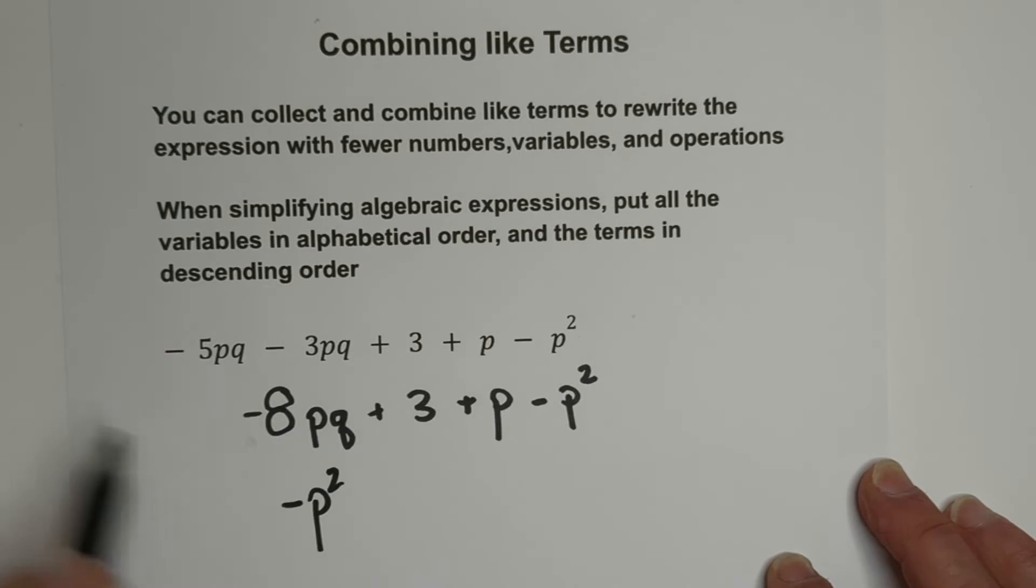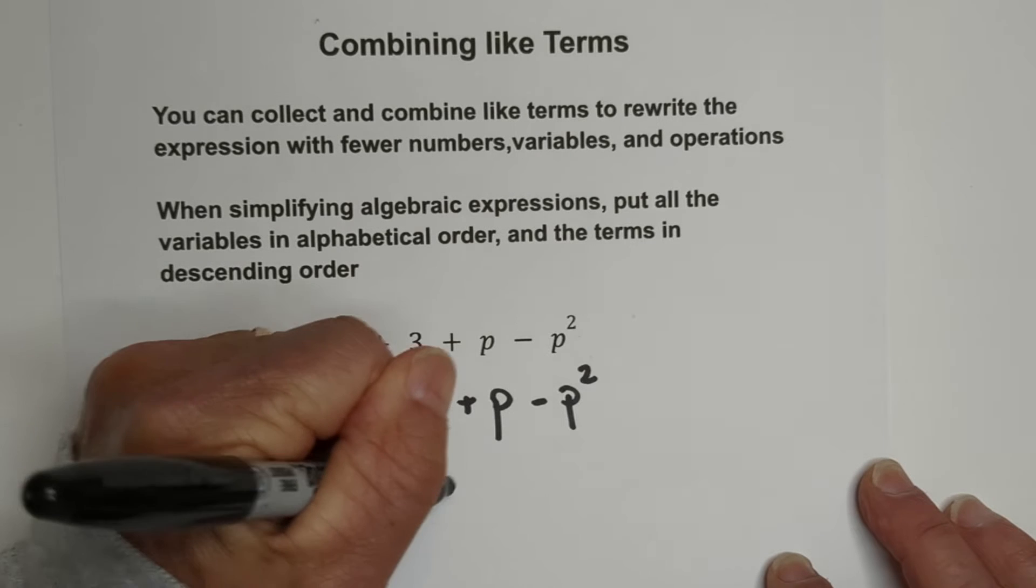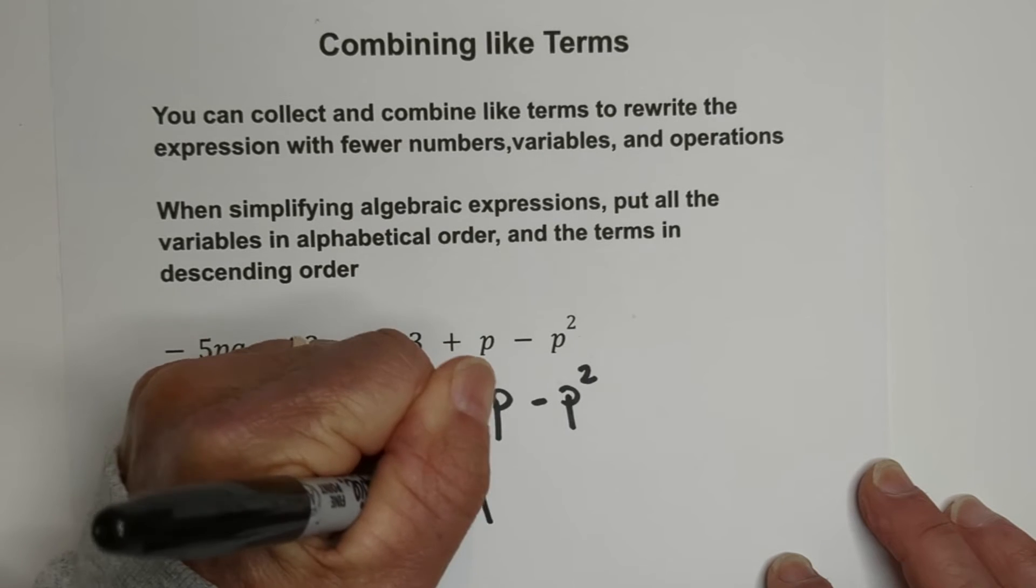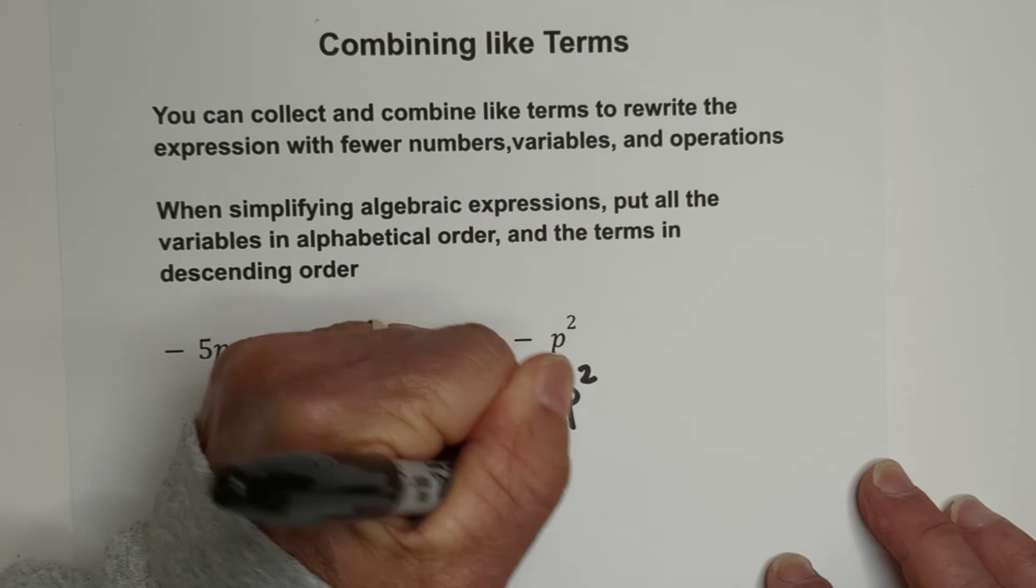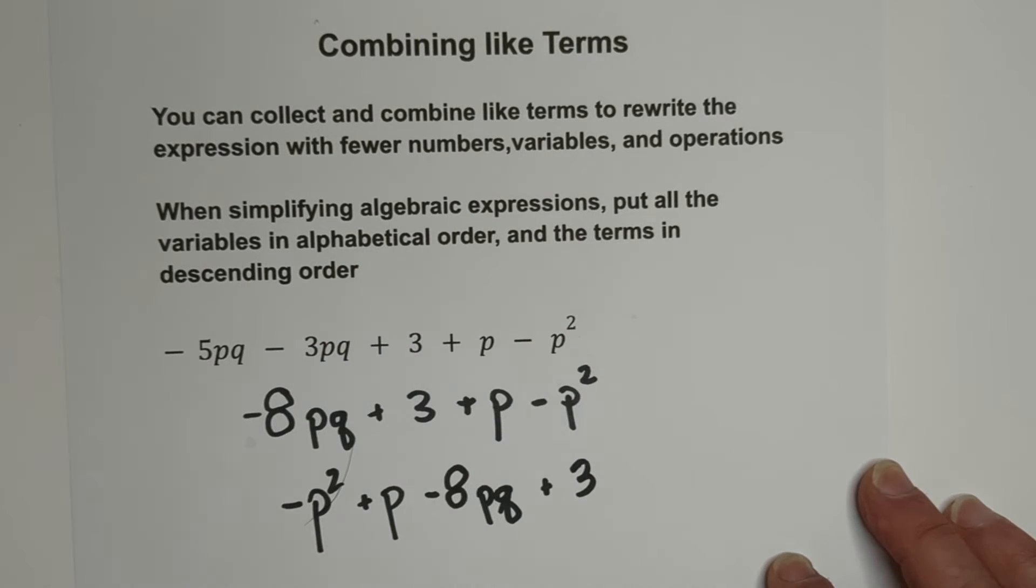Then I'm going to go in alphabetical order. I'm going to go plus P, then negative eight PQ, and then I'm going to place the constant last. So here is the first example.